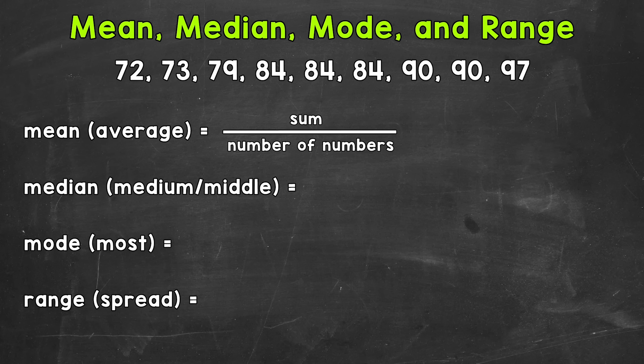So let's jump into our example and see exactly how to find mean, median, mode, and range. Now the first thing that we're going to want to do is to order our data from least to greatest. For the example, it's already in order from least to greatest.